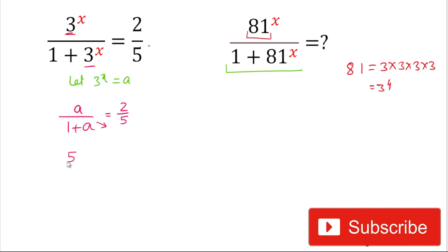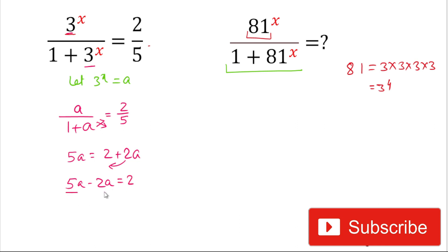Now we will cross-multiply to simplify: it becomes 5a equals 2 plus 2a. We take 2a to the left-hand side: 5a minus 2a equals 2, which gives 3a equals 2, so the value of a is 2 divided by 3.